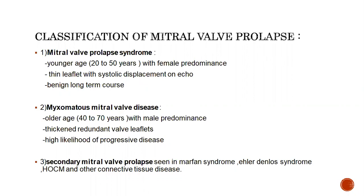Classification of mitral valve prolapse syndrome: MVP syndrome type 1 can occur in younger age, generally with female predominance. It has a thin leaflet with systolic displacement and a benign long-term course. Myxomatous mitral valve disease is generally seen in older age, between 40 to 70 years, with male predominance, and has a thick and redundant mitral leaflet with a high likelihood of progressive disease. Secondary mitral valve prolapse may be associated with Marfan syndrome, Ehlers-Danlos syndrome, HOCM, osteogenesis imperfecta, and other connective tissue diseases.